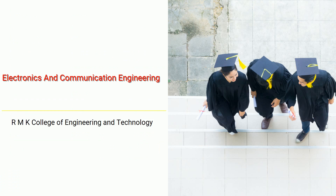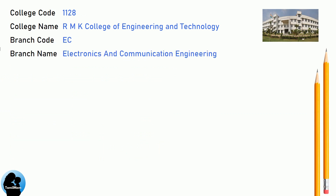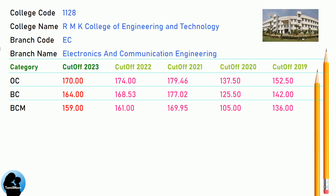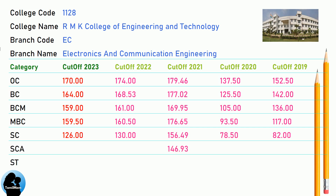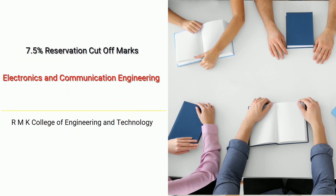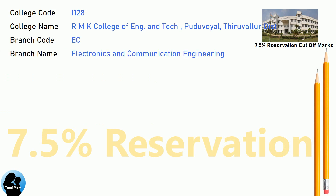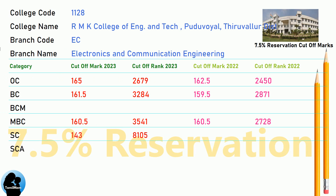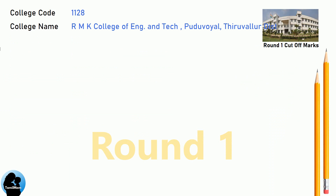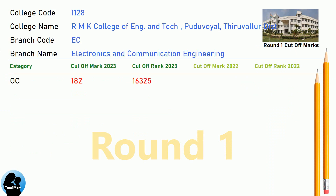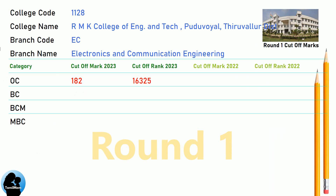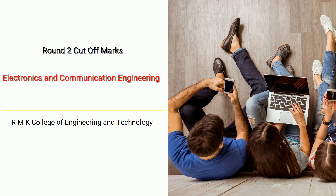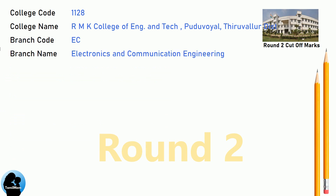DNA cutoff for MK College of Engineering and Technology in Electronics and Communication Engineering. DNA Round One cutoff for MK College of Engineering and Technology in Electronics and Communication Engineering. DNA Round Two cutoff for MK College of Engineering and Technology in Electronics and Communication Engineering.